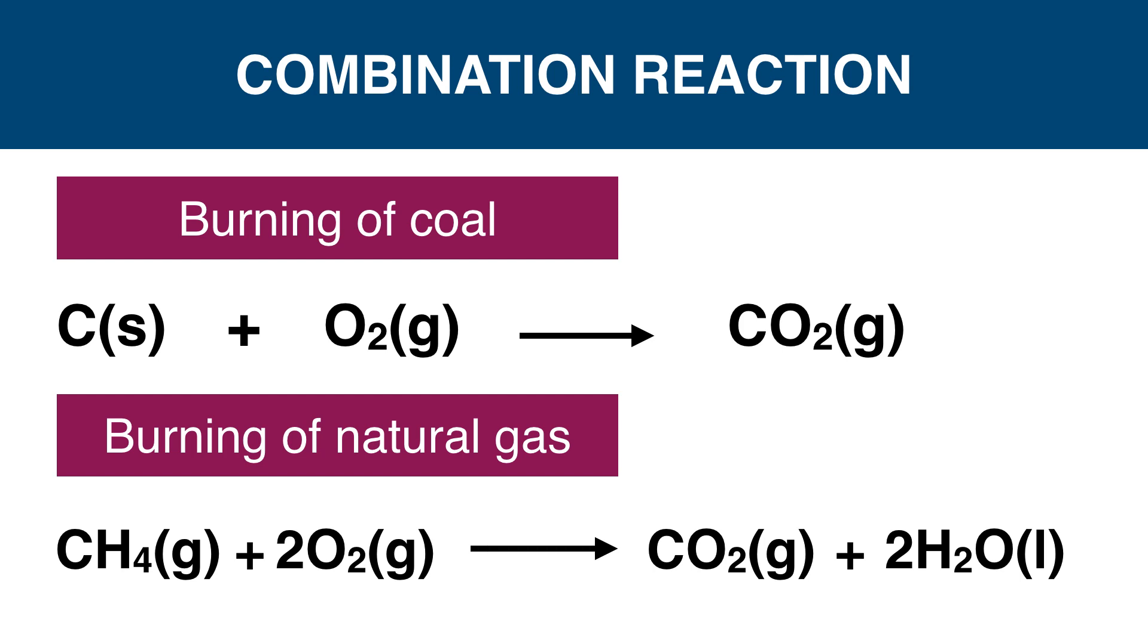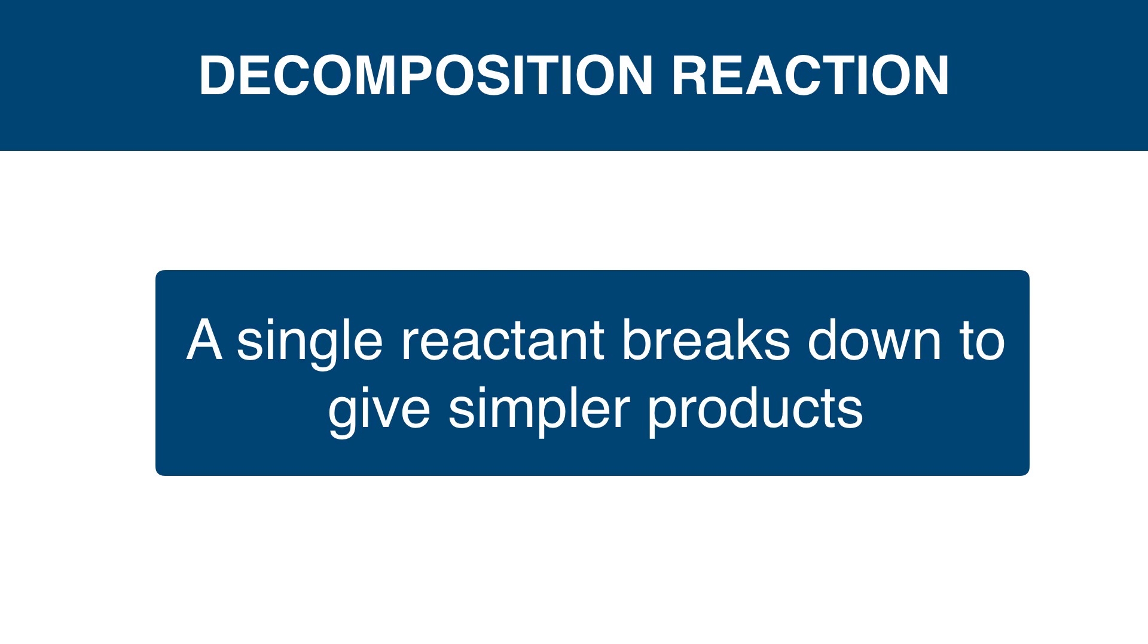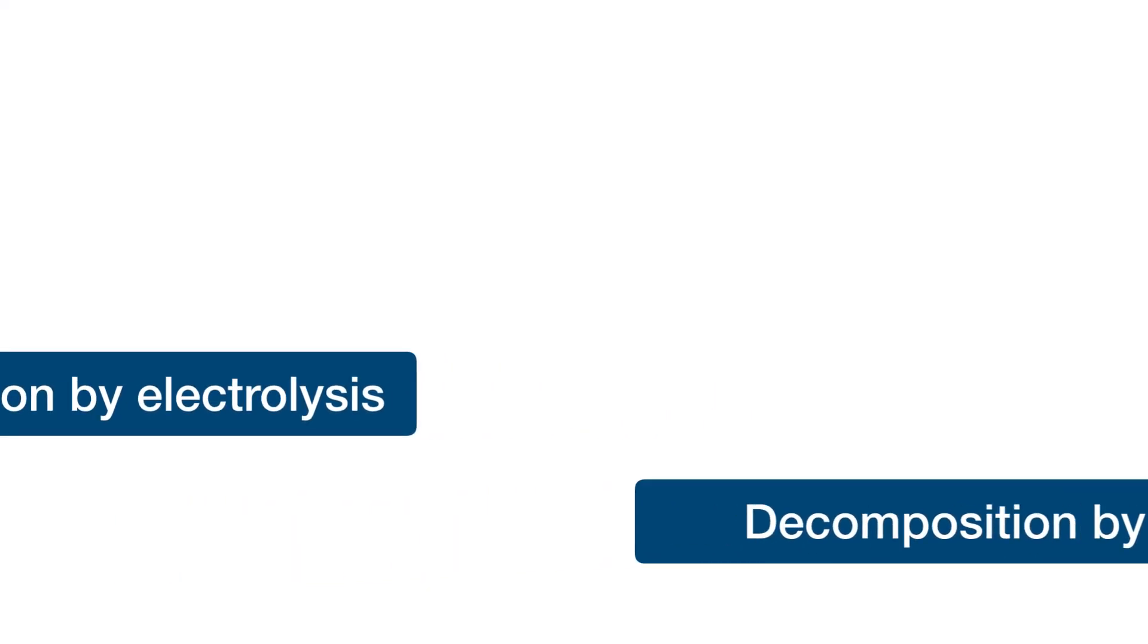The next type of chemical reaction is decomposition reaction. We learned the combination reaction is the formation of a single product by combining two or more reactants, but in decomposition reaction a single reactant breaks down to give simpler products. This breakdown process will occur in three ways: thermally, electrically, and photochemically.